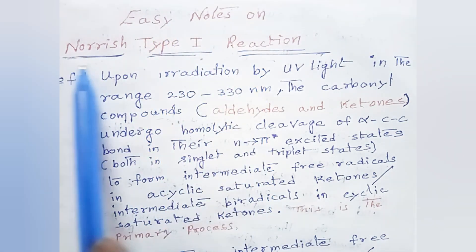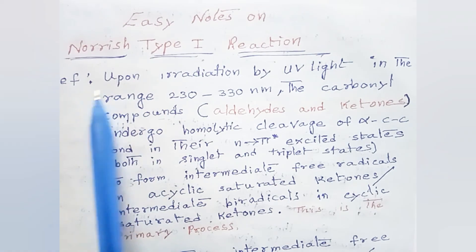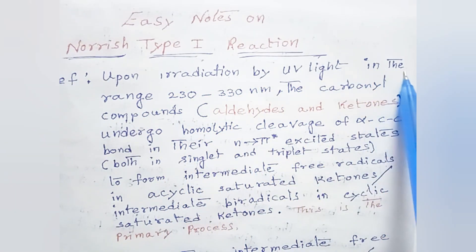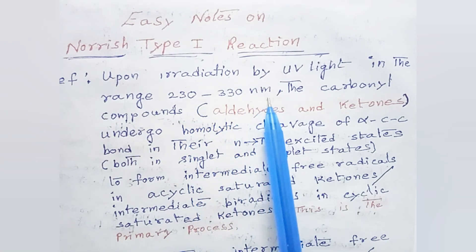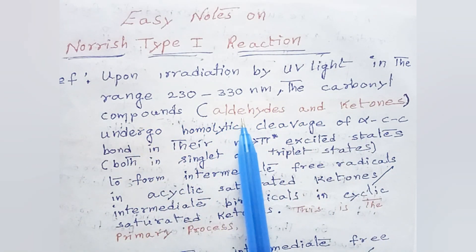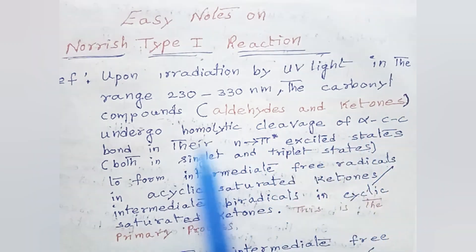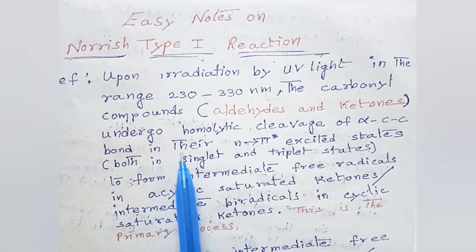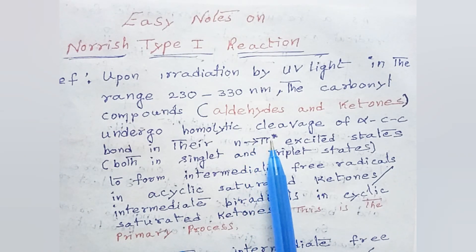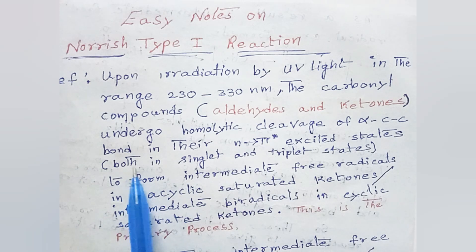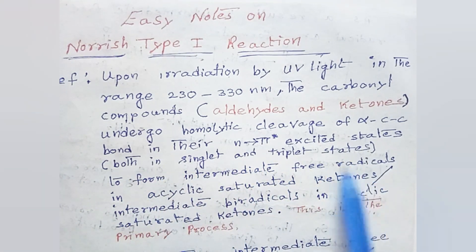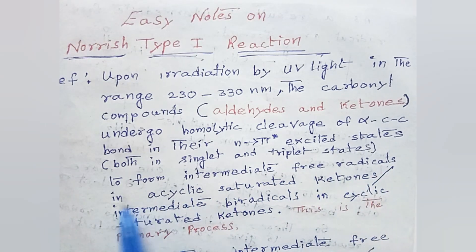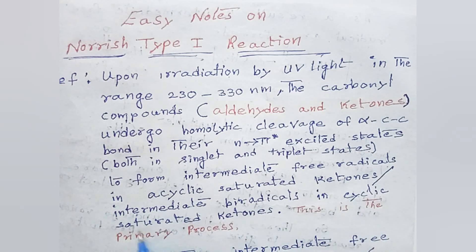Easy notes on Norrish Type 1 reaction. Definition: upon irradiation by UV light in the range 230 to 330 nanometers, the carbonyl compounds — that is, aldehydes and ketones — undergo homolytic cleavage of the alpha carbon-carbon bond in their n to π* excited states, both in the singlet and triplet states, to form intermediate free radicals in acyclic saturated ketones, or intermediate biradicals in cyclic saturated ketones. This is the primary process.